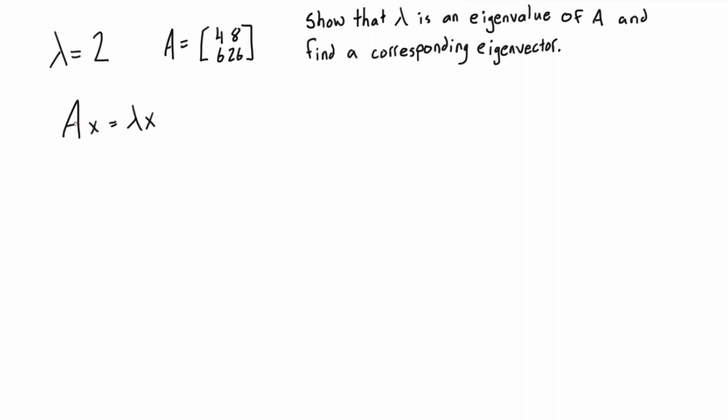Basically what this expression is: we have the matrix times the vector is going to give us the exact same thing, or the exact same transformation to the vector, as if we had just multiplied a certain scalar to it. That certain scalar will be an eigenvalue if we can construct this statement, and the vector here will be considered an eigenvector.